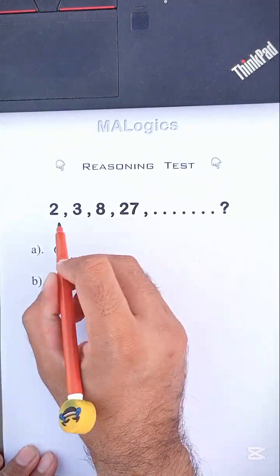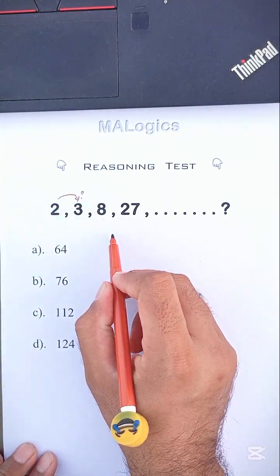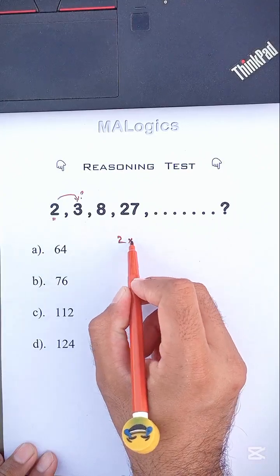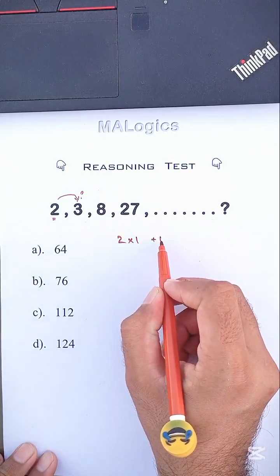Let's make this puzzle easy to solve. Here, 2 times 1 and again plus 1. So, 2 times 1 equals 2. Now, 2 plus 1 equals 3.